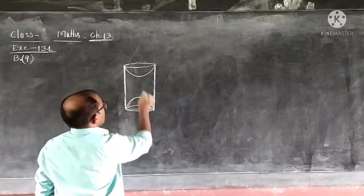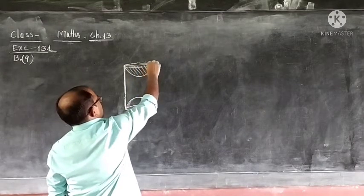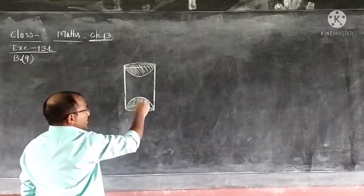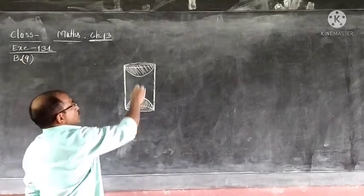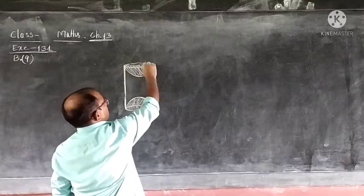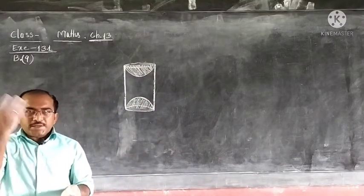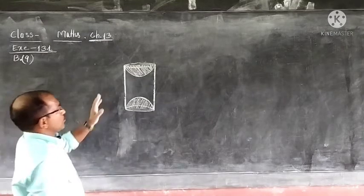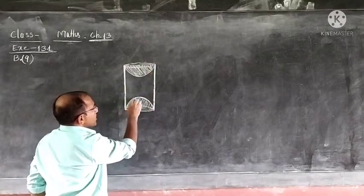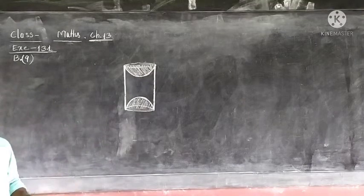From both ends of the cylinder, two hemispheres of the same radius are scooped out — cut out. So the solid now has the cylindrical curved surface in the middle, with hemispherical cavities at both ends exposed. We will calculate the curved surface area of the cylinder, plus the curved surface area of both hemispheres, and add them for the total surface area.